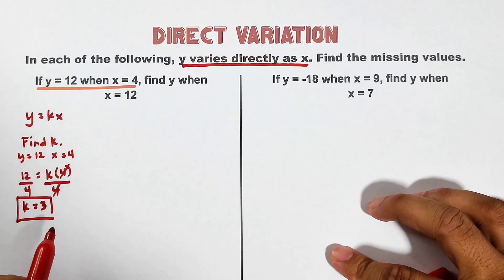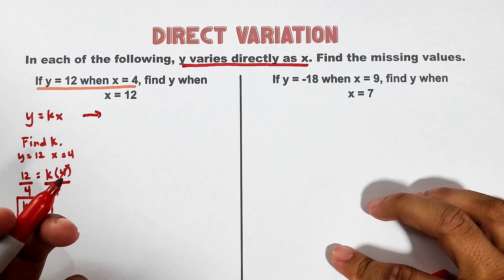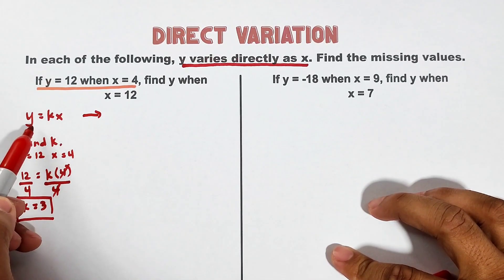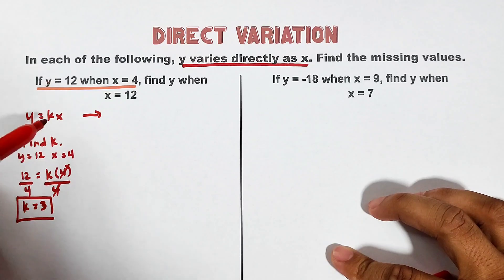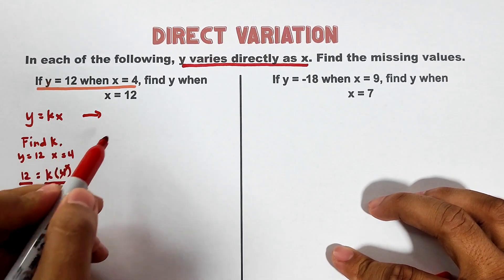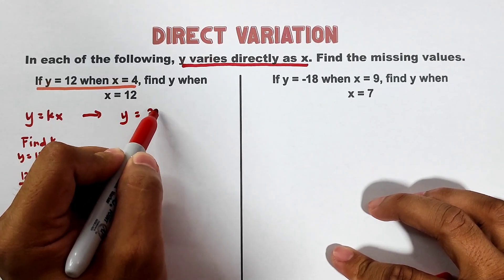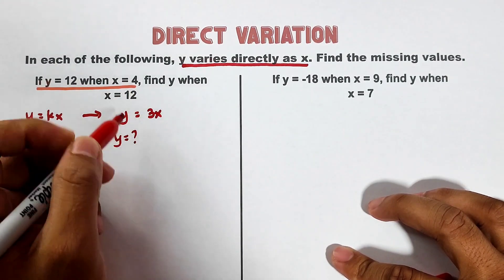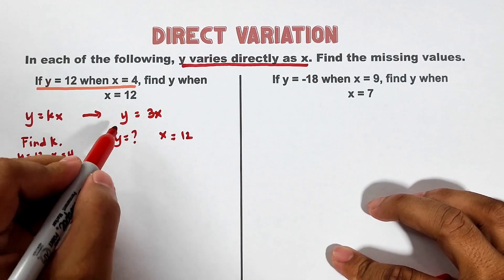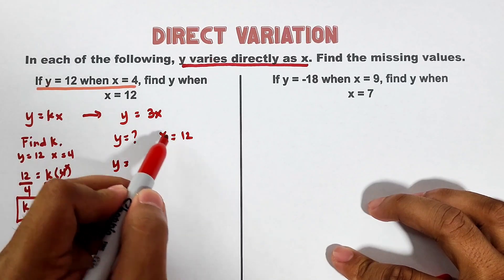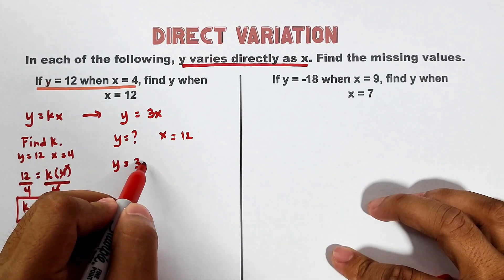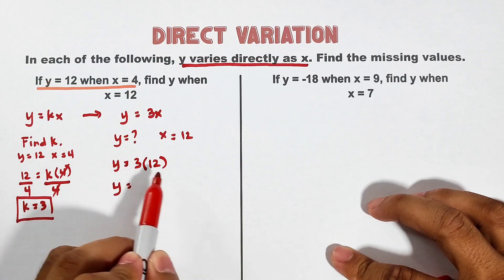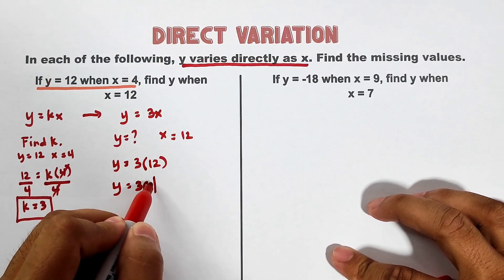After getting the constant of variation, we generate the working equation. Using y = kx and replacing k with 3, the equation becomes y = 3x. Now to find y when x is equal to 12: y is unknown and x is 12. Substituting, y = 3 times 12, which equals 36. So 36 is the value of y in example number 1.